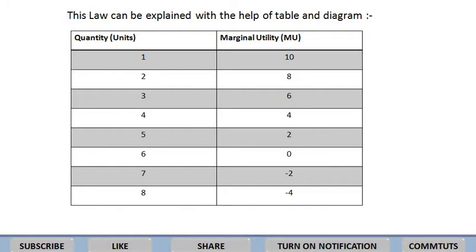जैसे law of diminishing marginal utility में पढ़ा — जब consumer किसी commodity को continuously consume करता जाएगा तो satisfaction कम होता जाएगा। एक ऐसा level आ जाएगा जब marginal utility zero हो जाएगा — जैसे 6 units consume किये तो MU = 0। इस case में consumer totally satisfied हो चुका है, अब commodity consume करने की इच्छा नहीं। अगर इसके बाद भी जबरदस्ती खिला दे तो utility negative में पहुंच जाती है।